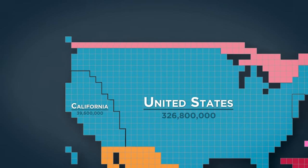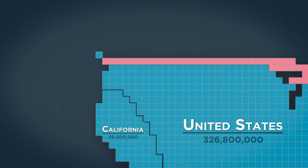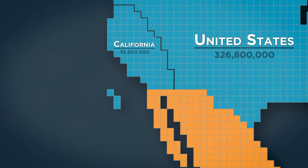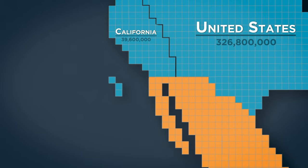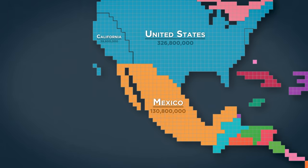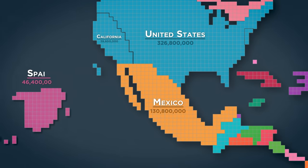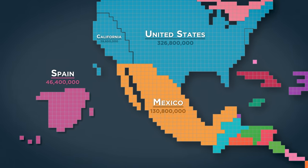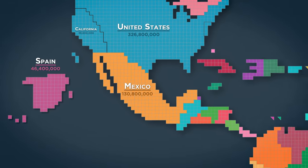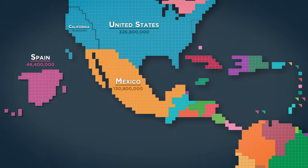Despite being the largest in land, Alaska is the 48th smallest state in population, with just a bit more than a single square, compared with Hawaii's three. Down south, Mexico has nearly three times the population of Spain, and is by far the world's largest Spanish-speaking country. Central America and the Caribbean have a lot more people than a lot of us probably think as well.